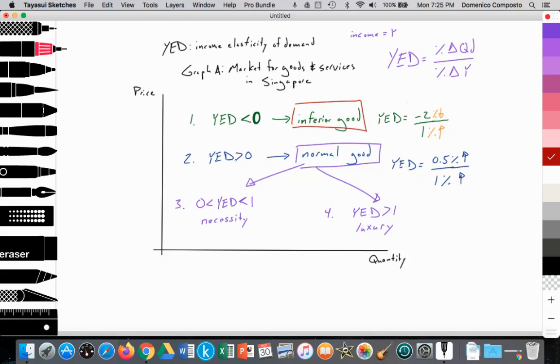If YED is greater than zero, then it's a normal good. We can divide it into two parts. If it's between one and zero, it's a necessity. You need food, you need housing, health care. These are necessities. And if YED is greater than one, then it is a luxury.